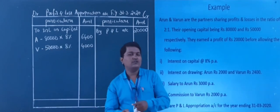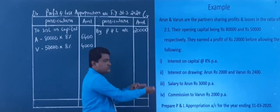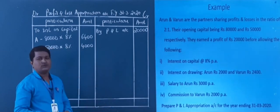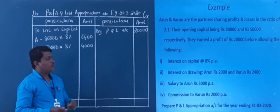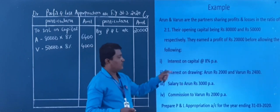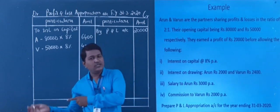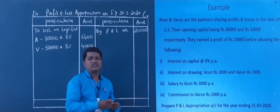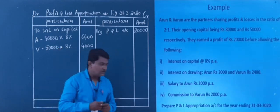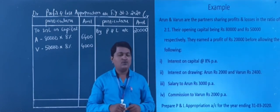First of all, we transfer profit. After transferring profit, we go for adjustments. Now we go for the next kind of adjustment — interest on drawings. Here they have given separately Arun's interest on drawings and Varun's interest on drawings. We do not need to calculate here because the amounts are directly given in the question.